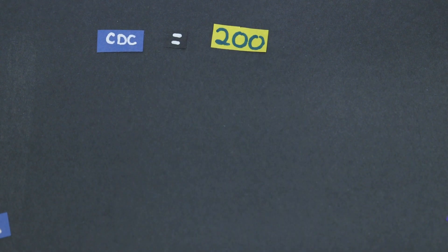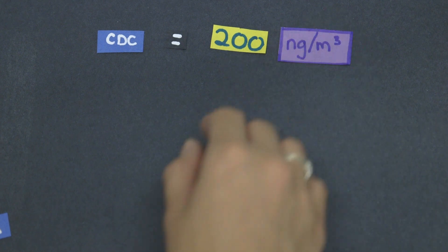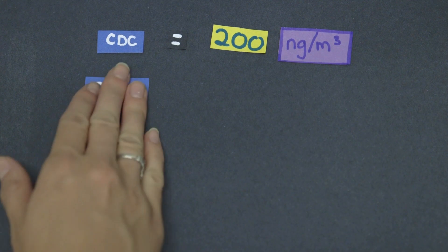The Centers for Disease Control and Prevention allows for 200 nanograms per cubic meter of a chemical called hexavalent chromium to be in the air.